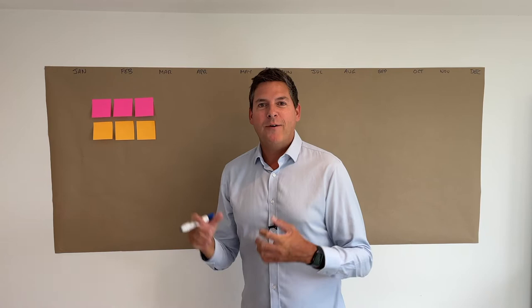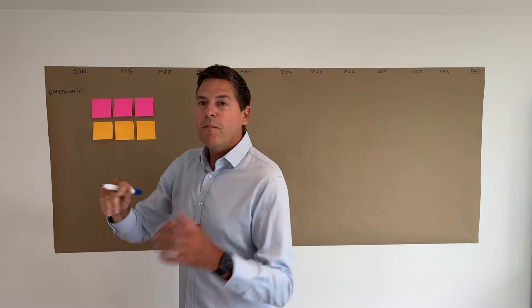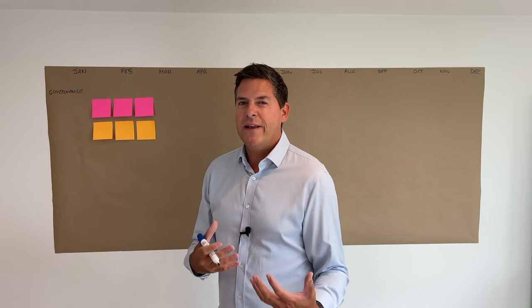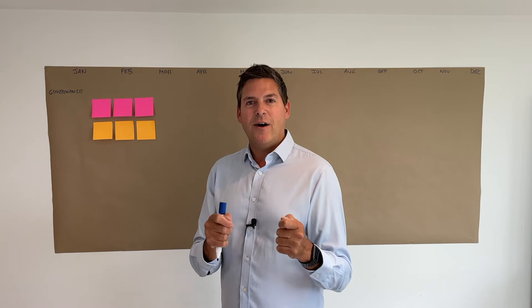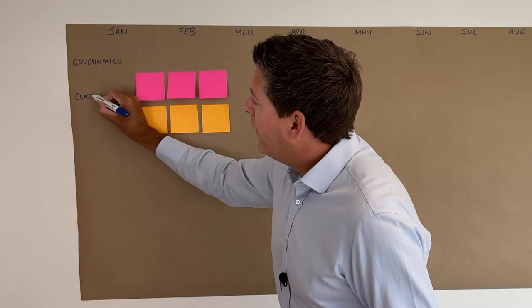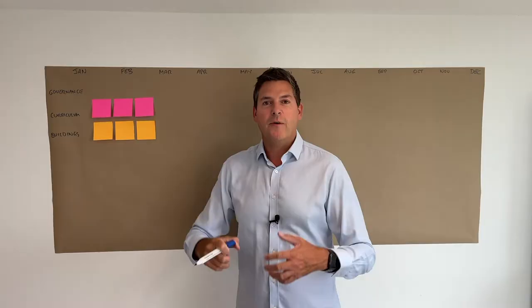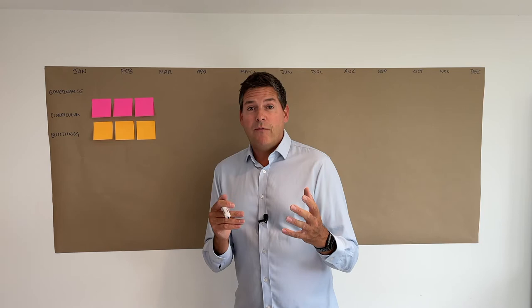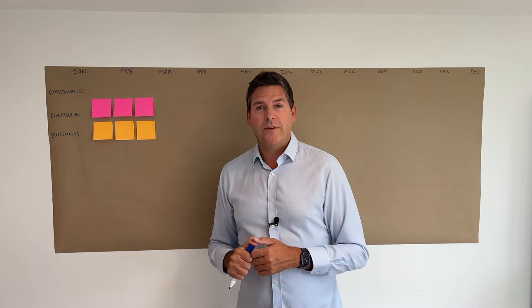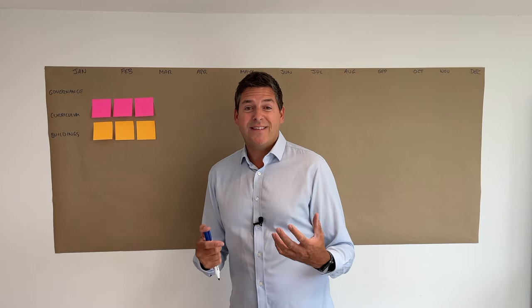With the timeline on the wall, we can begin the session. For work streams, let's pick some — we said governance, curriculum, and buildings. You might want to start on a separate area or on post-its because things might move around before you really get into the planning. The most important part is to just get started — get some stuff on your paper so you've got anchor points to work with. It's really helpful at the very start to think about what are those anchor points that are fixed in time.